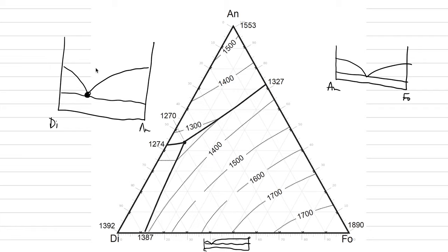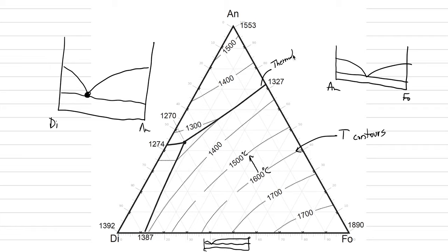We look at the binaries on the side view, whereas we look at the ternary from the bird's eye view, looking down on a surface. Each of these dashed, dotted lines here are temperature contours. We read them just like elevation contours. For example, this is 1600 degrees C and we're going to go down in temperature to 1500 degrees C, heading towards a thermal valley. Here it's 1400, and between them there's a cold point — this colder line we're going to label a thermal valley.